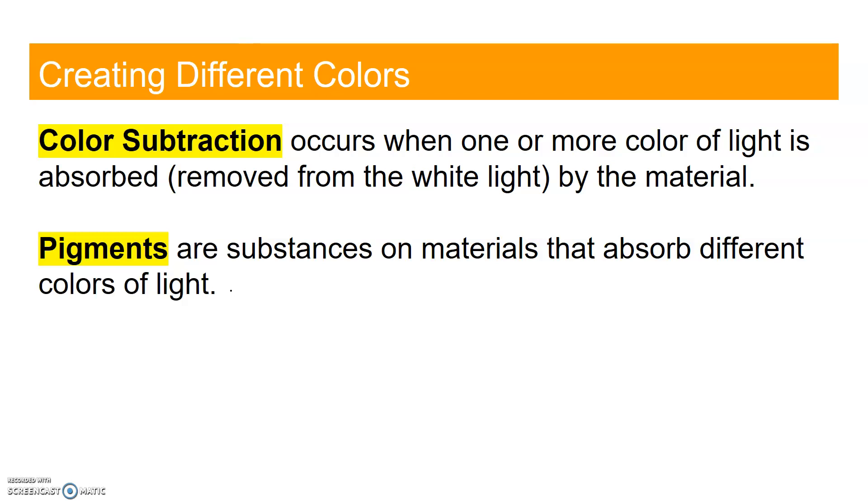The next method is called color subtraction. The opposite of addition is subtraction. Color subtraction occurs when one or more color of light is absorbed or removed from the white light by the material. Pigments are materials that absorb different colors of light.